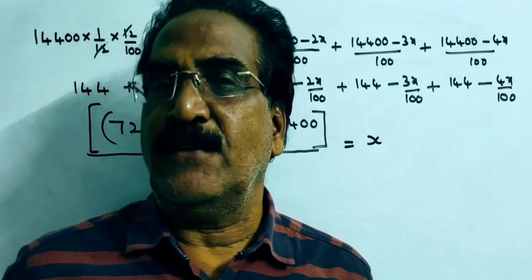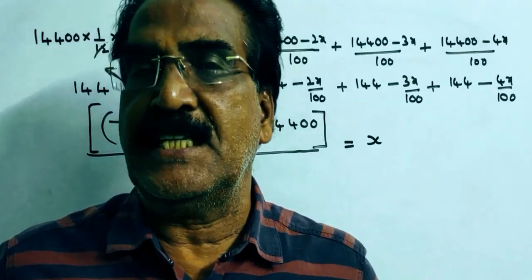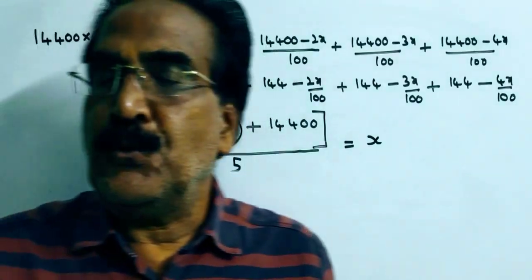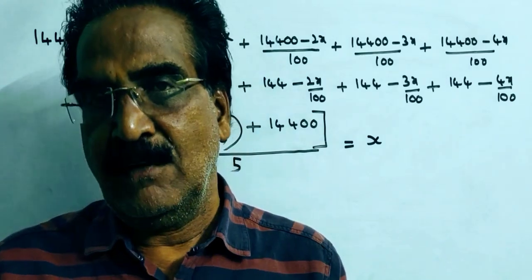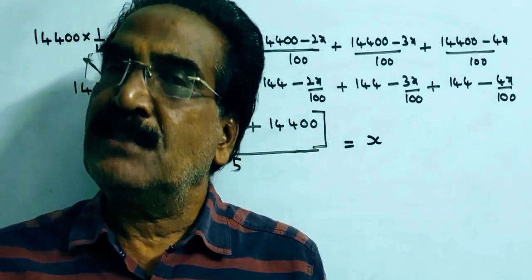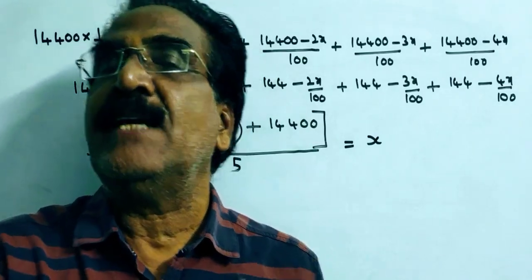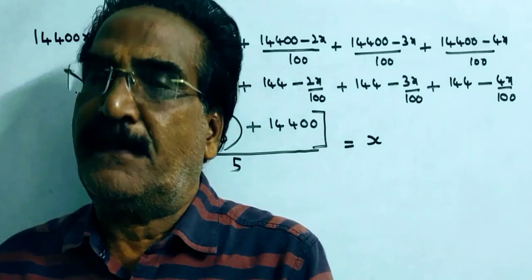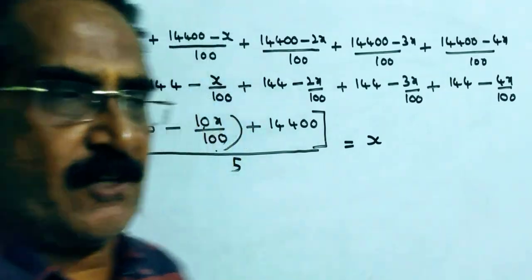Hi friends, good morning. Please look at the next problem in simple interest. The problem is given in the description box. A scooter is sold for rupees 19,200 cash, or 4,800 rupees cash down payment and the remaining 14,400 in five monthly installments at 12% simple interest. What is the monthly installment?